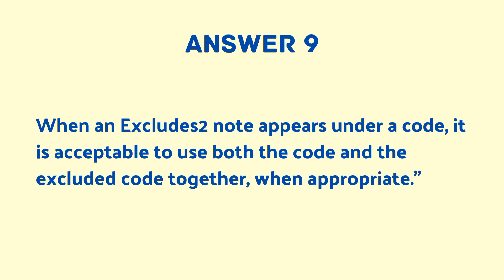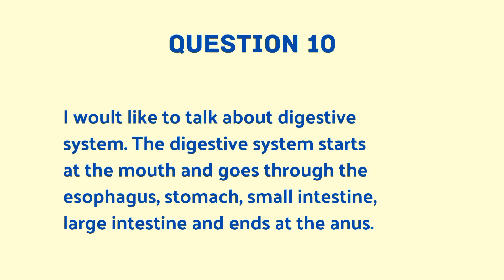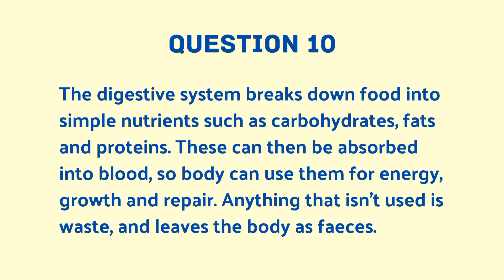Tell me something about any body system you prefer. I like to talk about the digestive system. The digestive system starts at the mouth and goes through the esophagus, stomach, small intestine, large intestine, and ends at the anus. It breaks down food into simple nutrients such as carbohydrates, fats, and proteins, which are absorbed into the blood so the body can use them for energy, growth, and repair. Anything unused leaves the body as feces.